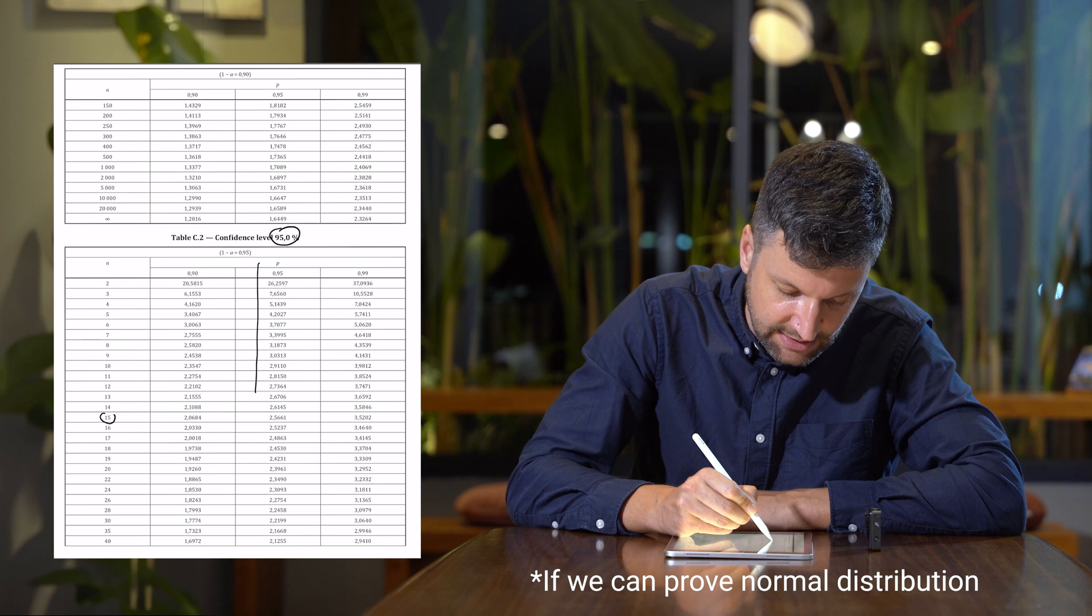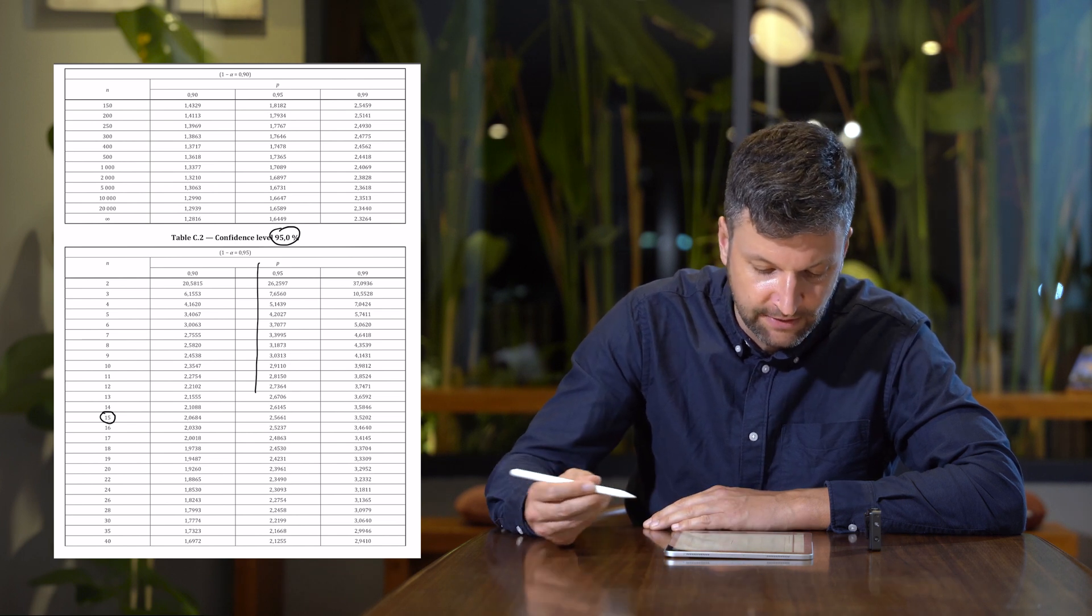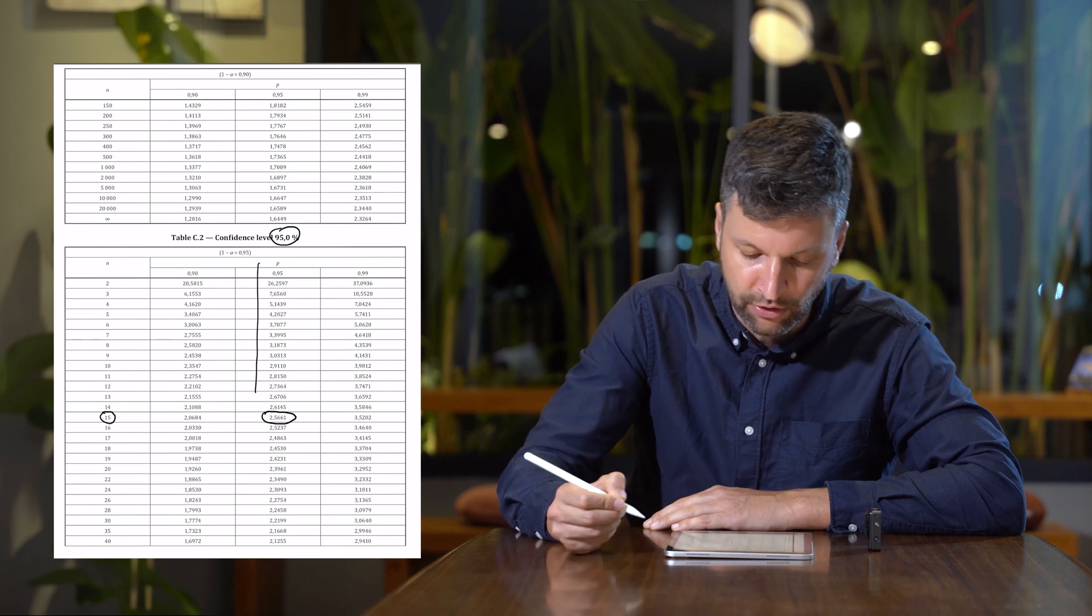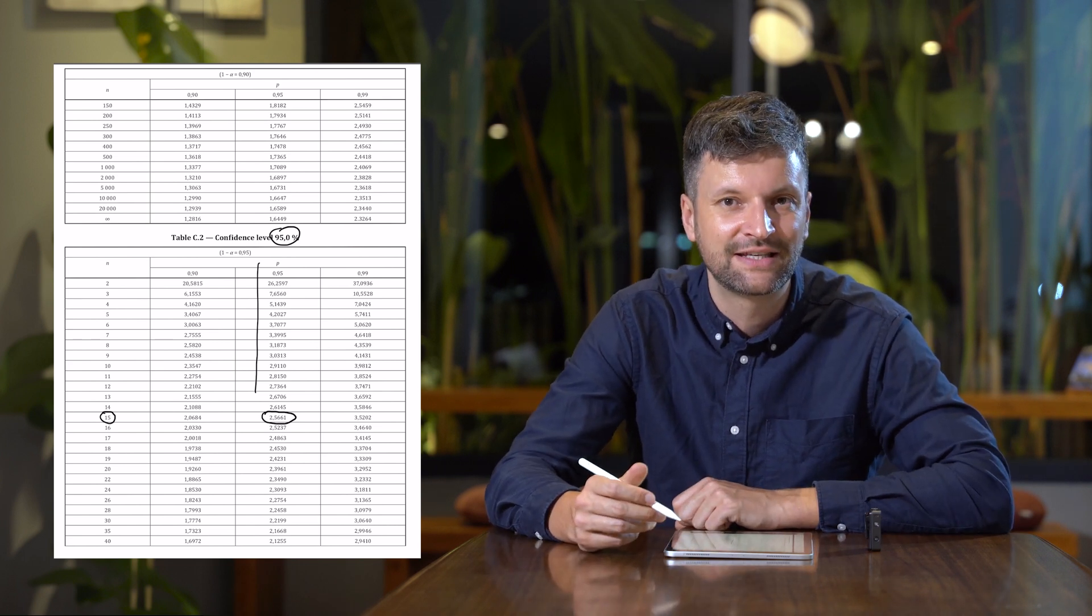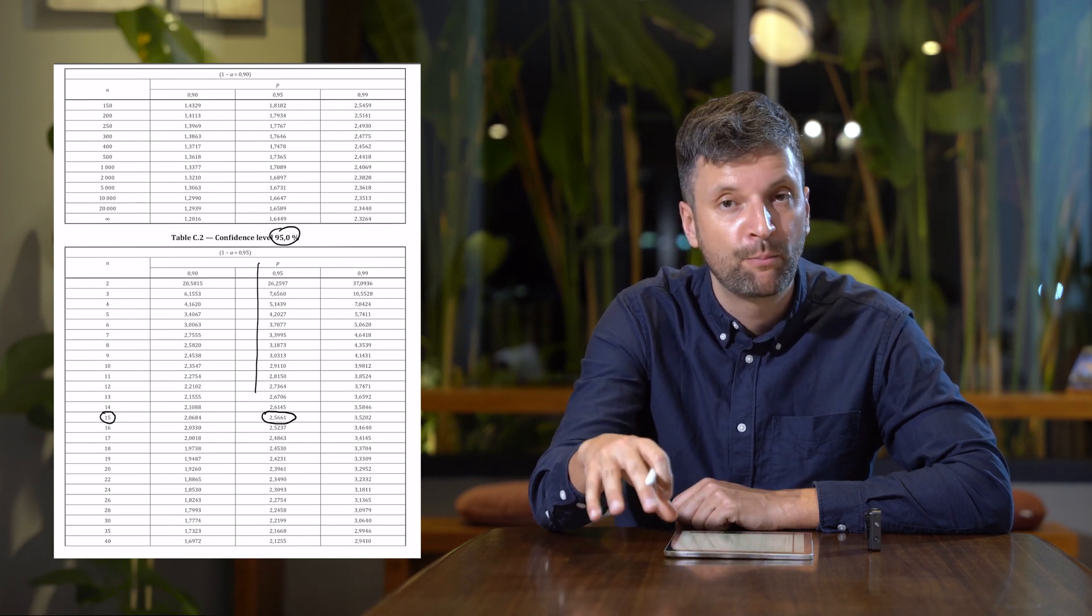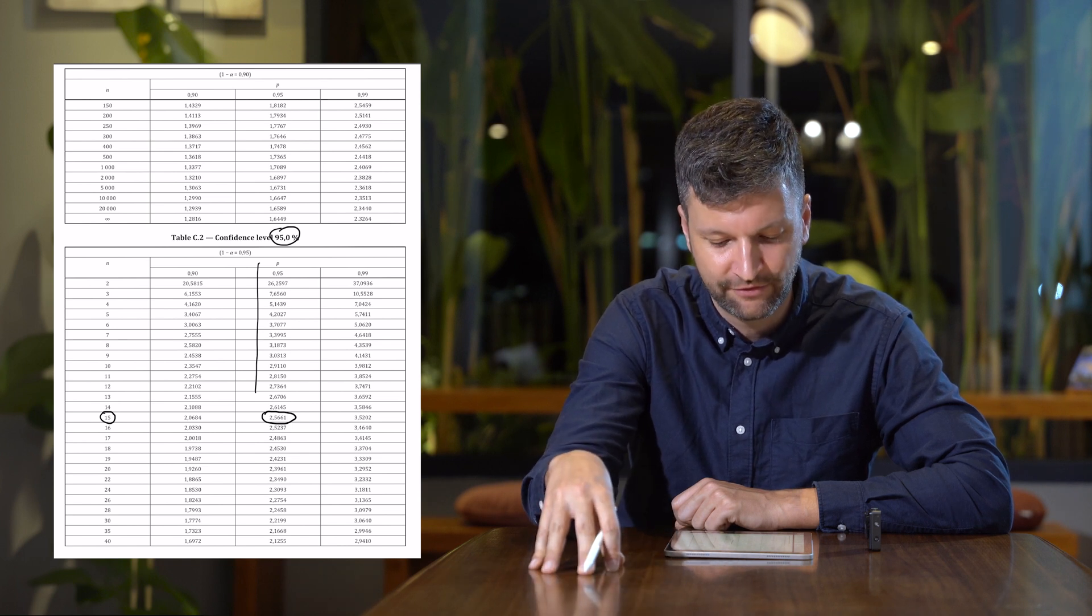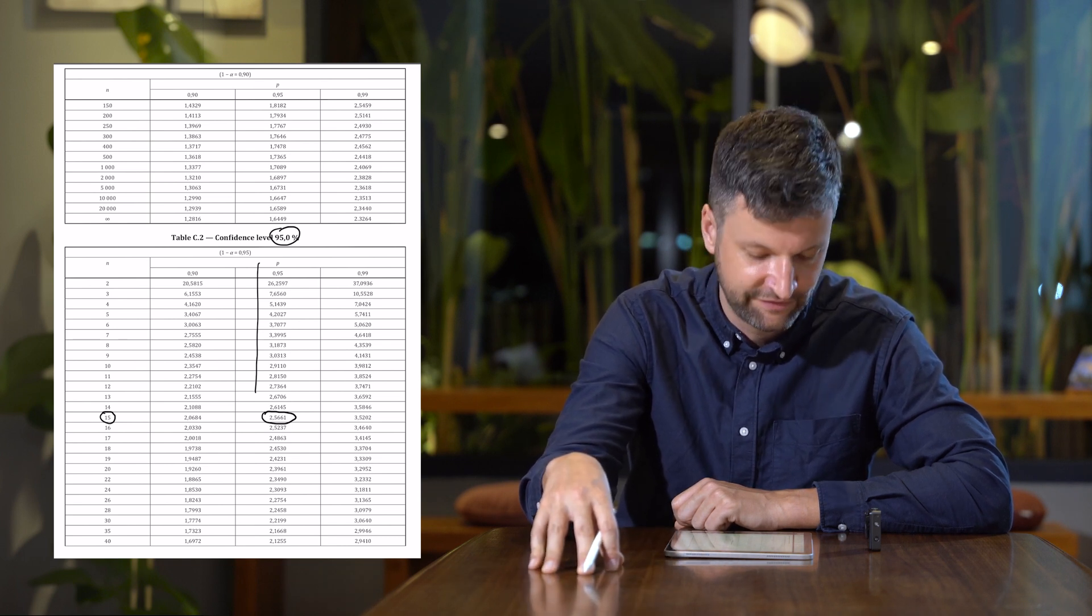And for this example, we go with an N of 15, and that means we get a K value of 2.5661. That is the K value for a one-sided statistical tolerance interval with 95% confidence and 95% reliability and an N of 15.